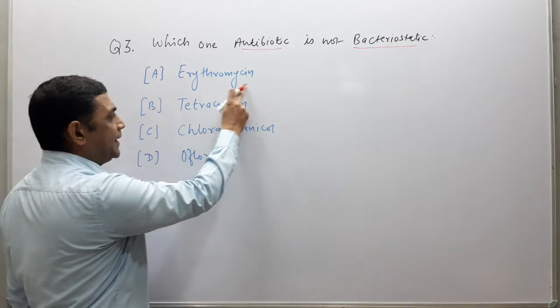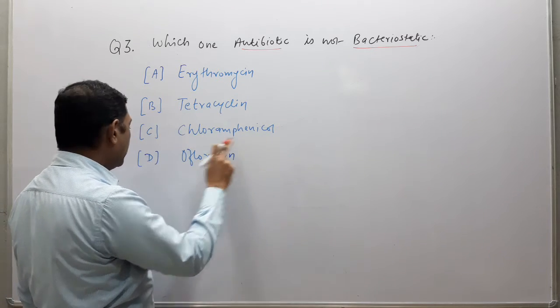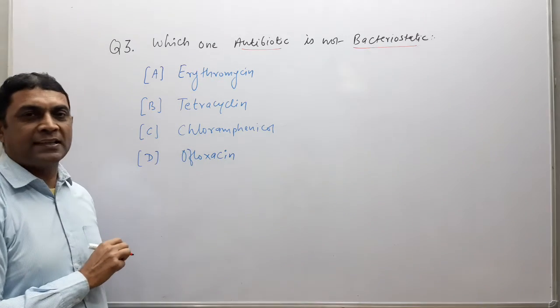Option A: Erythromycin, Option B: Tetracycline, Option C: Chloramphenicol, Option D: Ofloxacin.